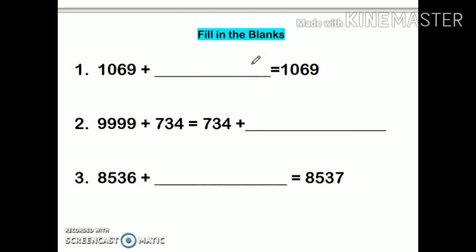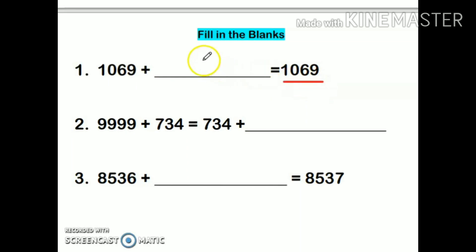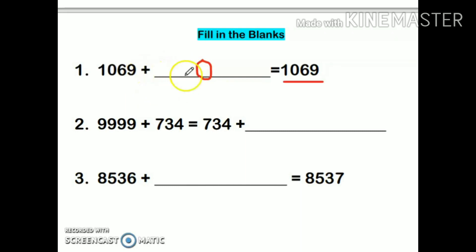Now we will discuss a few examples of properties of addition. These are fill-in-the-blanks. My first one is 1069 plus blank, so that my answer remains the same. My answer will be zero, because as we discussed earlier, when zero is added to any number, the answer is the number itself.